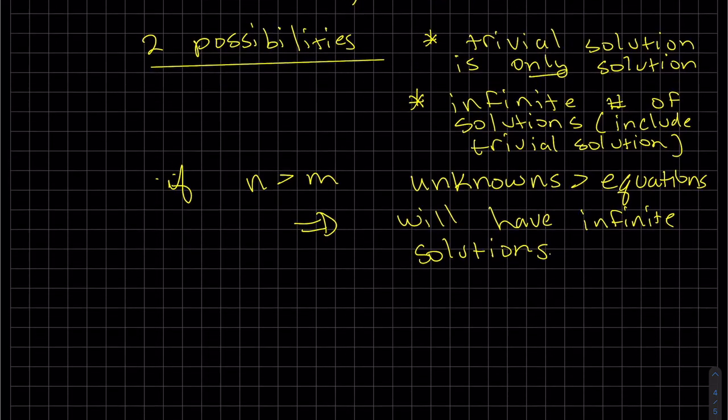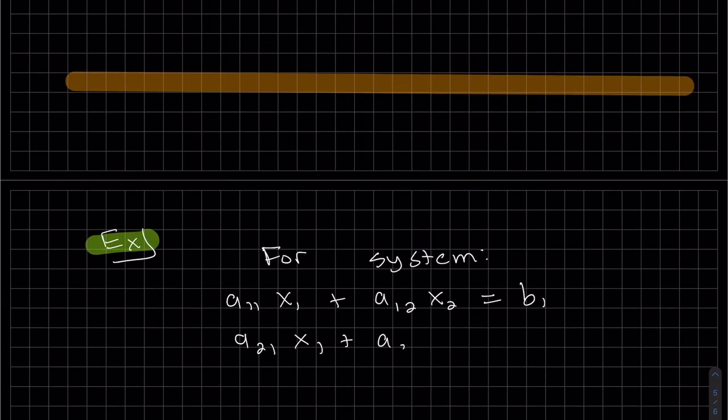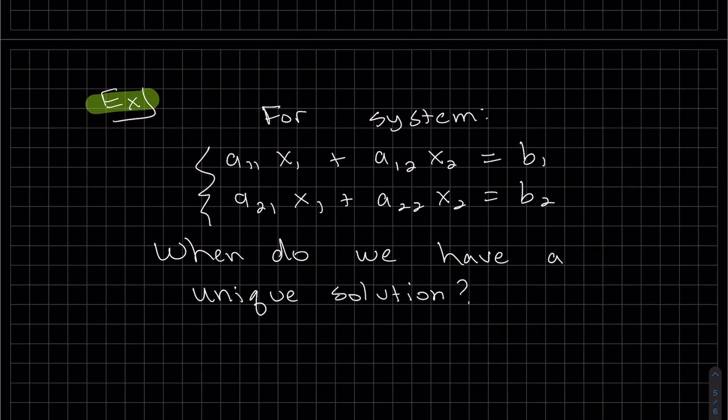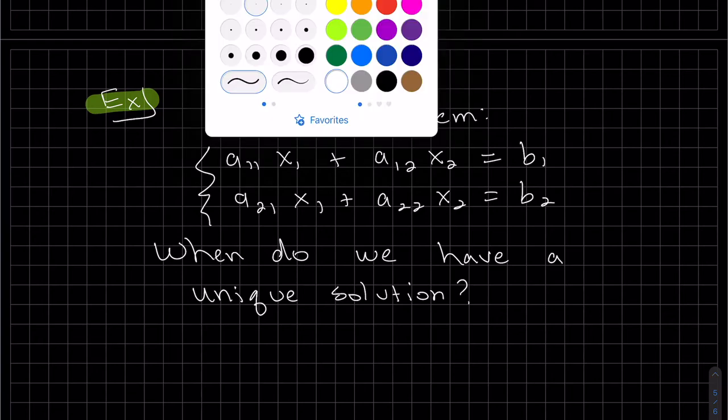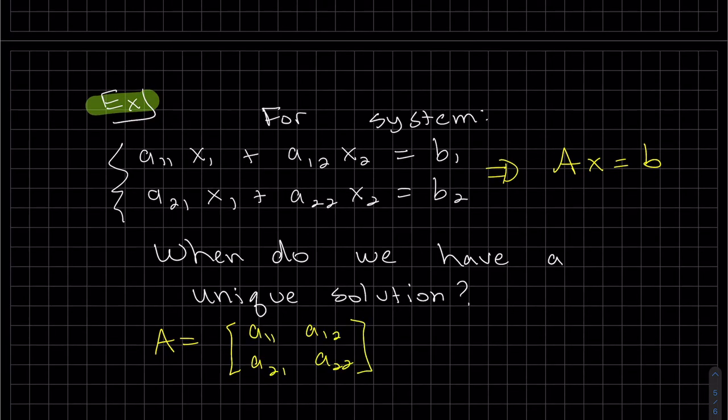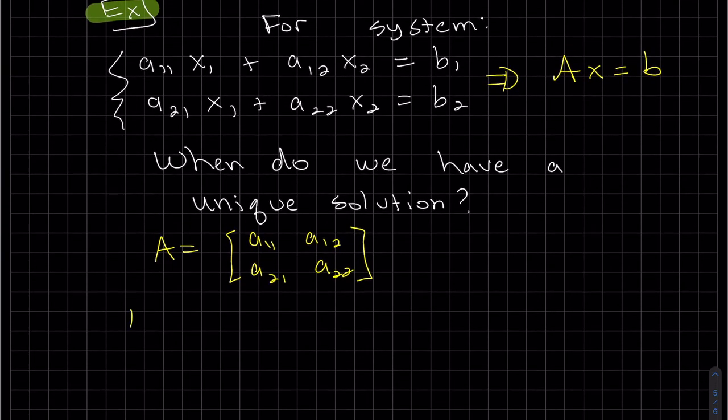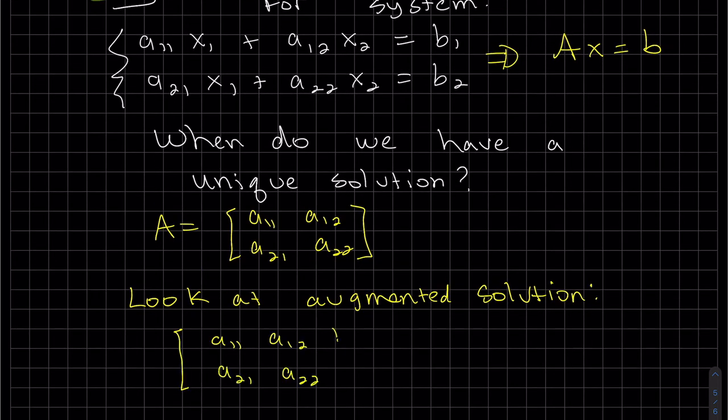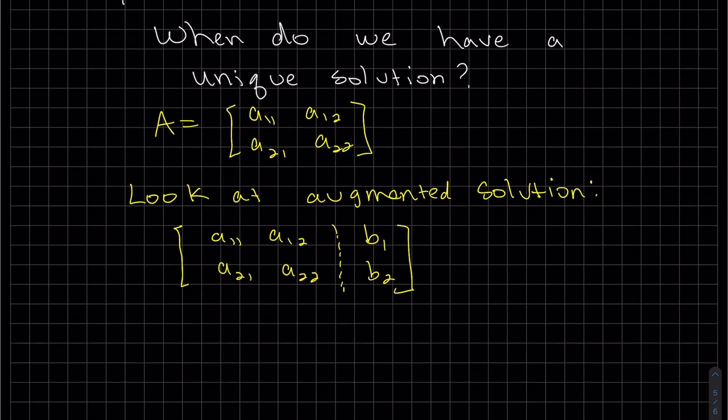One last example. So for this system, when do we have a unique solution? So do remember this is the system we're switching back to ax equals b, but a here will be just a two by two. So what we're going to do is we're going to augment it, b1, b2. Now when it's numbers it's pretty easy. We don't need to go all the way and make it row reduced all the way to reduced row echelon form. But we want a one here and then zero that out. That's how we're going to do our first two steps.